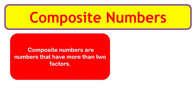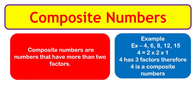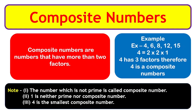Composite numbers: numbers that have more than two factors are called composite numbers. Examples: 4, 6, 8, 12, 15. For example, 4 is a composite number because it has three factors: 1, 2, and 4. Notes: any number which is not prime is called a composite number. 1 is neither prime nor composite — it is a special number. 4 is the smallest composite number.